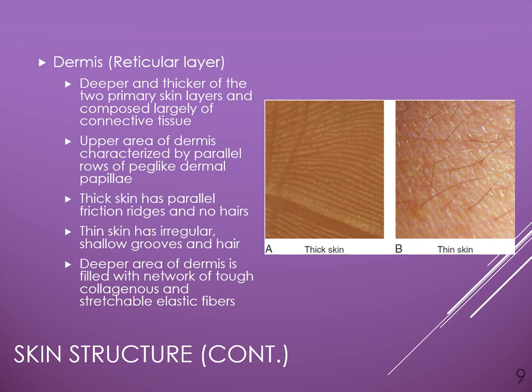Now let's talk about the dermis. The dermis has little bumps or peg-like projections referred to as dermal papillae. This is within the uppermost area of the dermis and is referred to as the papillary layer. This is what helps the epidermis and dermis bind and fuse together. On the palms and soles of the feet, we find thicker skin, which has ridges and is usually devoid of hair.